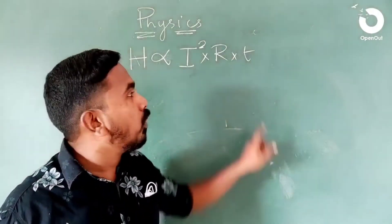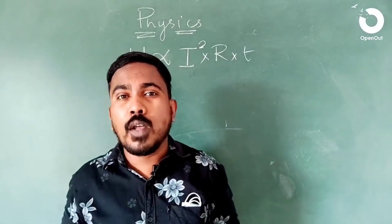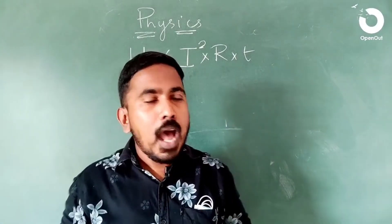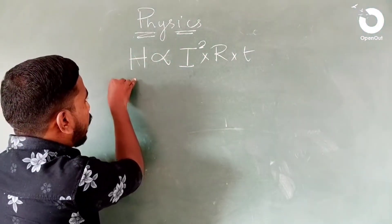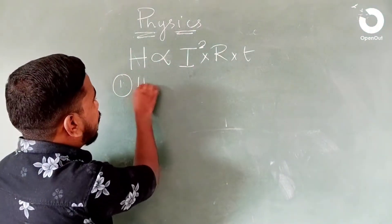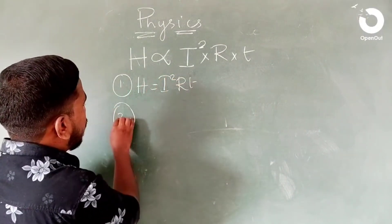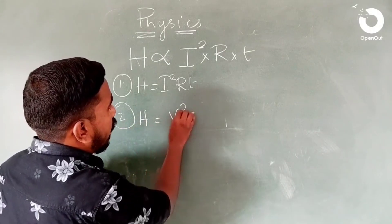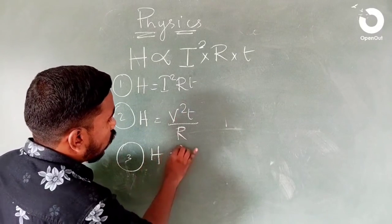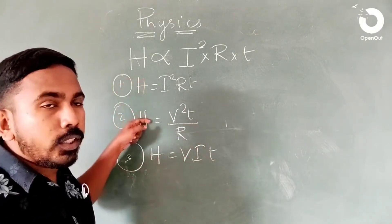There are three types of equations. The third equation is H = V·I·T. These are the three equations of Joule's Law.